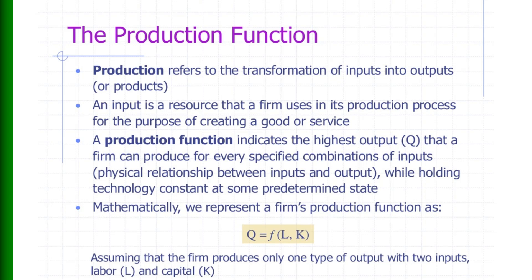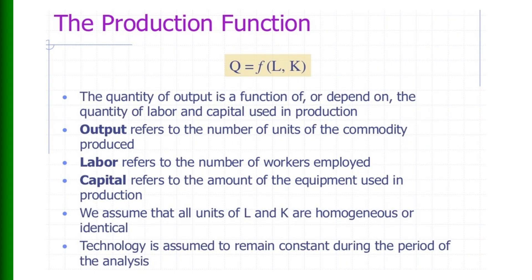Mathematically, we can represent a firm's production function as Q is a function of L and K. That is, the firm produces only one type of output Q with two inputs: labor and capital. The quantity of output is a function of, or depends on, the quantity of labor and capital used in production. This is what we mean by the production function.